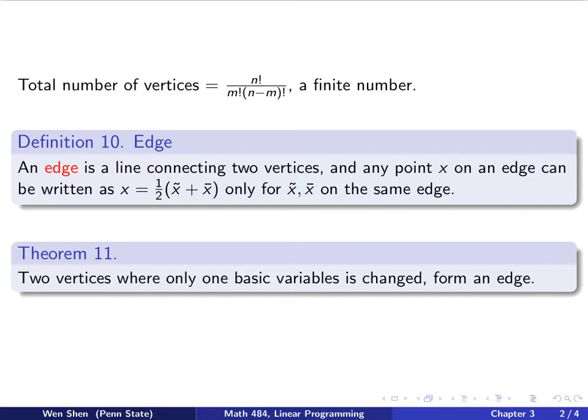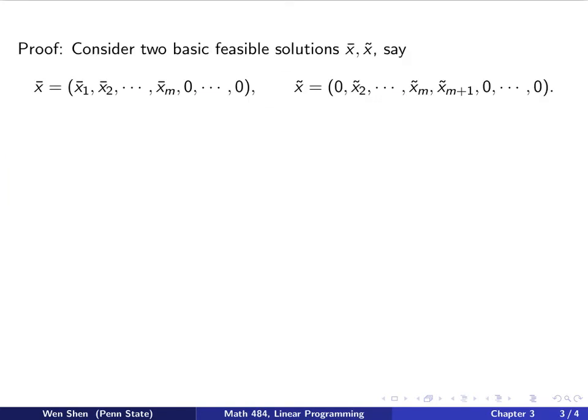Let's see how we conclude this. We follow the definition. So we consider two basic feasible solutions. We call it x bar, x tilde. We reuse these notations in our proofs, and they are different things in different proofs. So here we have these two such that x bar is a basic feasible solution with x1 to xm as basic variables, when x tilde is a basic solution with x2 to xm plus 1 as the basic variables. So you have noticed that the basic variables are switched by one. Namely, you take out x1 and add xm plus 1, and then you move from x bar to x tilde.